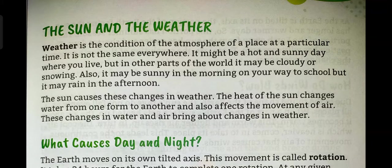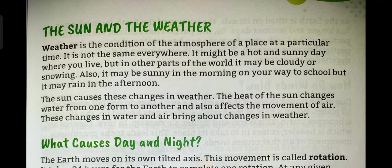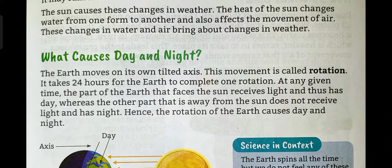All this variation is caused by the sun. The heat of the sun changes the form of water from one form to another, and the weather depends on it. The movement of air also affects the weather conditions, which causes day and night.